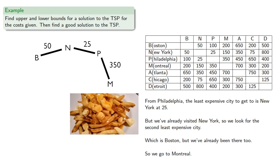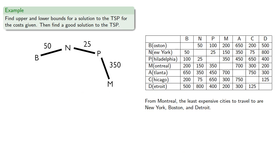And while we're there, we might as well grab some poutine for the road. From Montreal, the least expensive cities to travel to are New York, Boston, and Detroit. But we've already visited New York and Boston, so we go to Detroit.